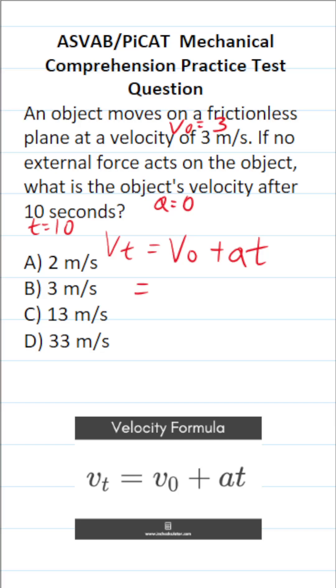All right, let's plug those values in. This becomes 3 plus, again, acceleration is 0. So this is 0 times 10. 3 plus 0 times 10 is 0.